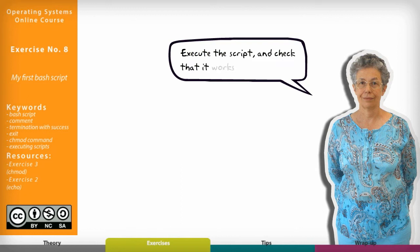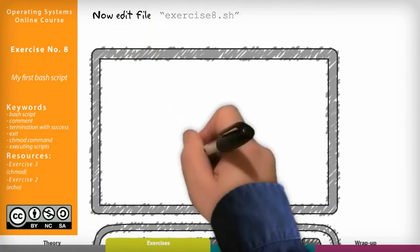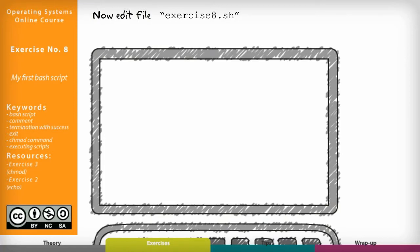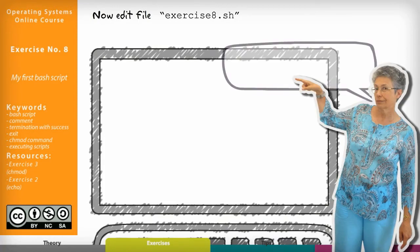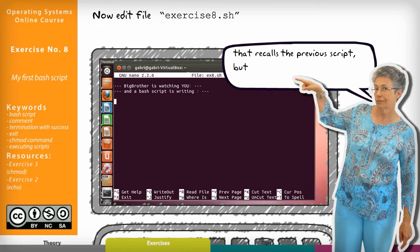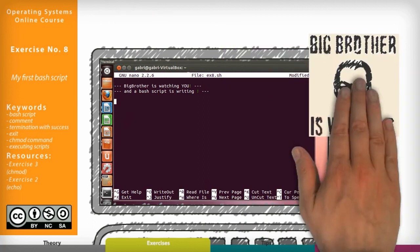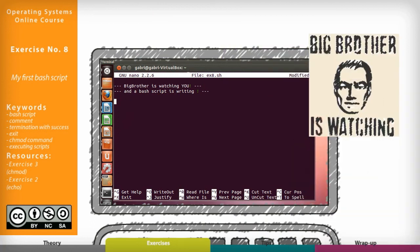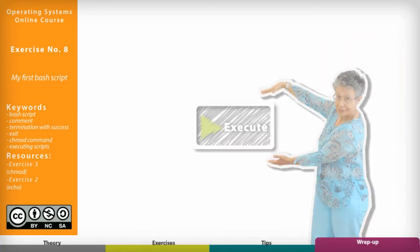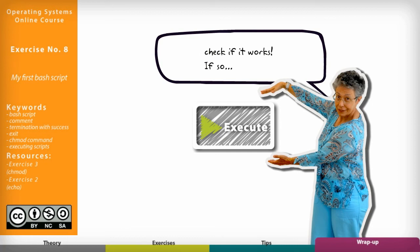Execute the script and check that it works correctly. Now edit file exercise8.sh, which recalls the previous script, but prints instead the following two lines: '----' and 'the bash script is writing ----'. Then execute it and check if it works.